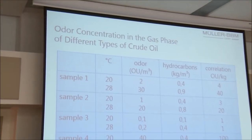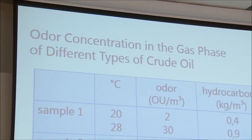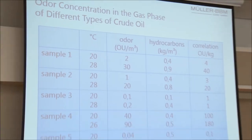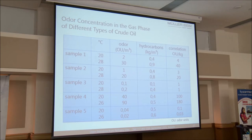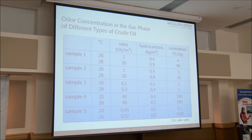This table shows the odor concentrations measured in the headspace of crude oil samples. I must give a correction: the values are given in million odor units per cubic meter, not as originally labeled. What you can see is that some crude oil brands are strongly odorous — we measured headspace values up to nearly 100 million odor units per cubic meter. This is not true for all types of crude oil: typically Russian and Arabic crude oils are very strongly odorous, whereas oils from the North Sea are not very odorous. And again we can see the temperature dependency.